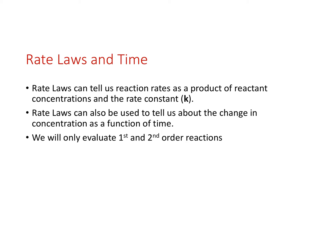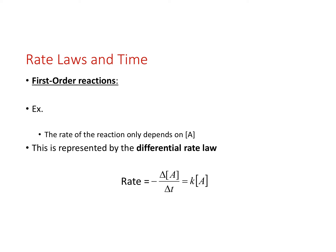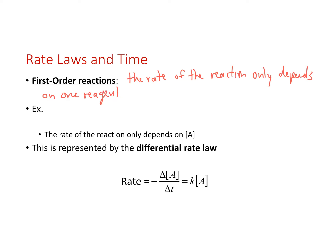We're going to look at first and second order reactions. A first order reaction is one where the rate only depends on one reagent in the reaction. A first order reaction would look something like A goes to B, where the rate law is rate equals the rate constant times the concentration of A to the first power. That is a first order reaction — the reaction only depends on the concentration of A and nothing else.